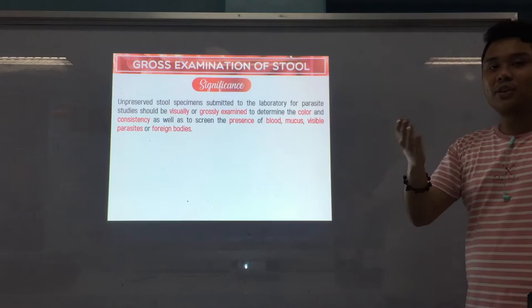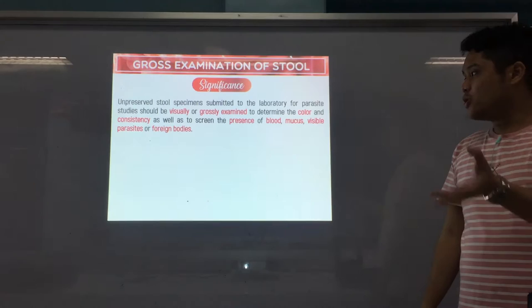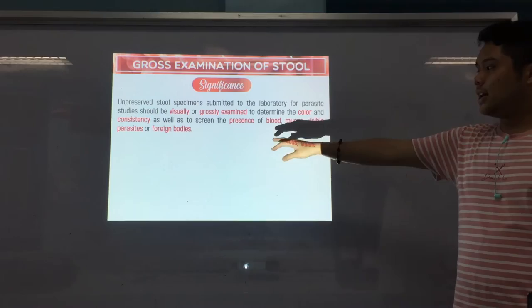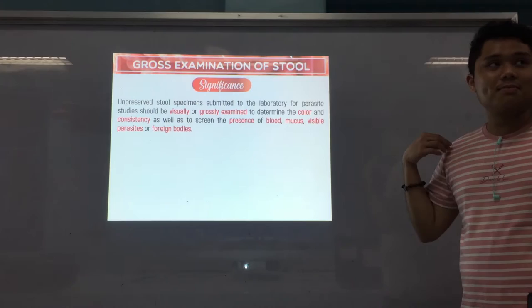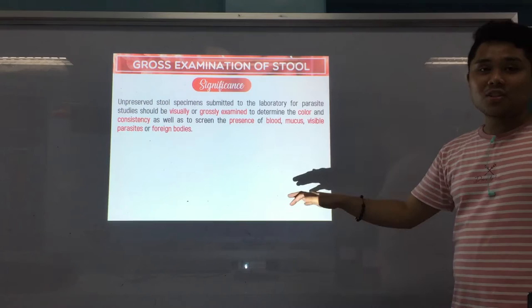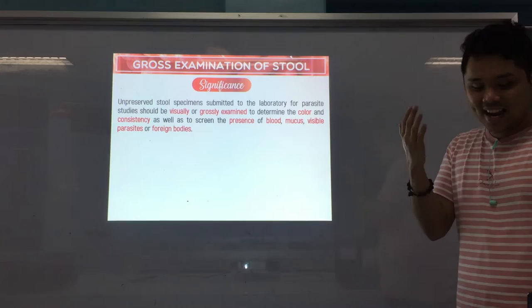For the significance: your stool specimens, unpreserved or preserved, they should be visually or grossly examined to determine the color and consistency, as well as to screen for the presence of blood, mucus, or visible parasites, and even foreign bodies. If there is blood or mucus present in your stool, it could indicate that maybe the patient is having amoebiosis, because amoebiosis samples usually contain blood or mucus.